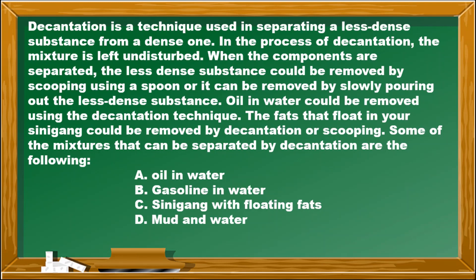In decantation, the mixture is left undisturbed. You can separate the mixture either by scooping using a spoon or by slowly pouring out the less dense substance. For mud and water, you set it aside undisturbed for several minutes so the mud settles, then you slowly pour the water into another container to complete the separation.